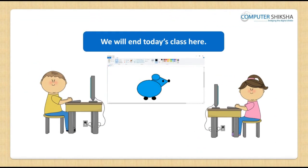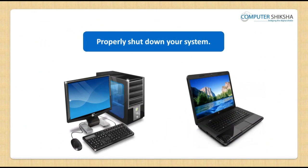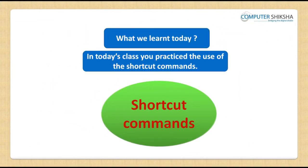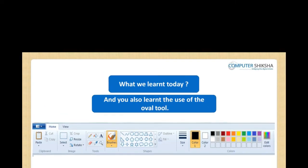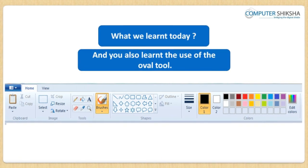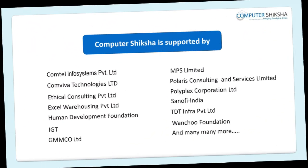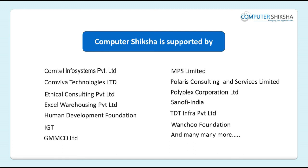We will end today's class here. All of you close your file and then properly shut down your computer. In today's class, you practiced the use of the shortcut commands and also learned the use of the oval tool, along with the use of Color Box 1 and Color Box 2. Computer Shiksha is supported by. Thank you.